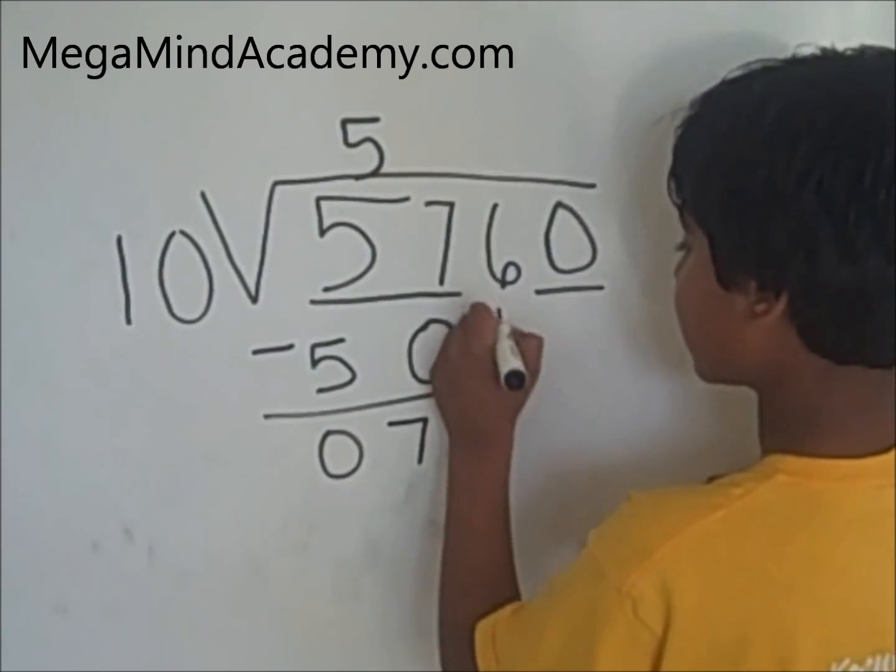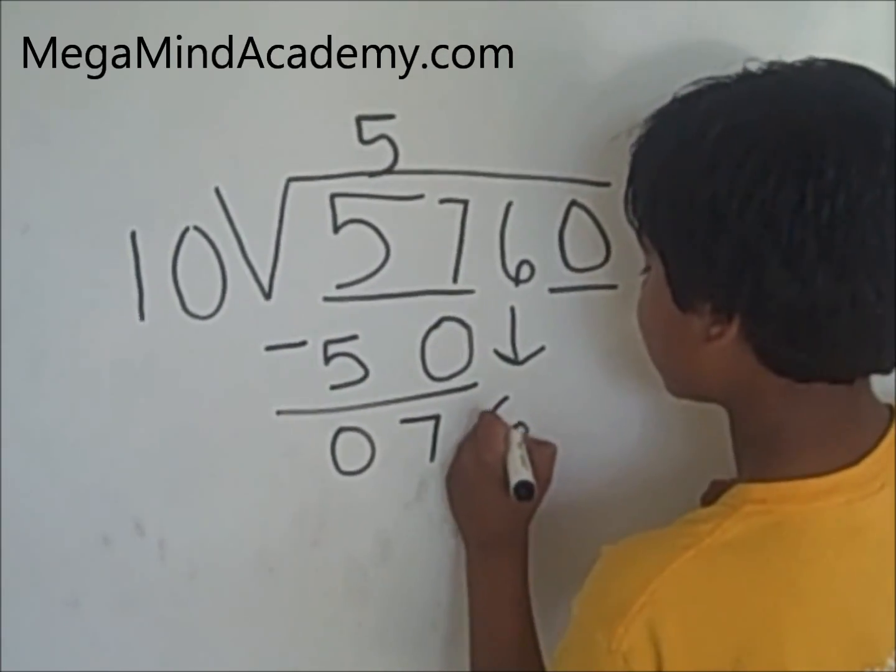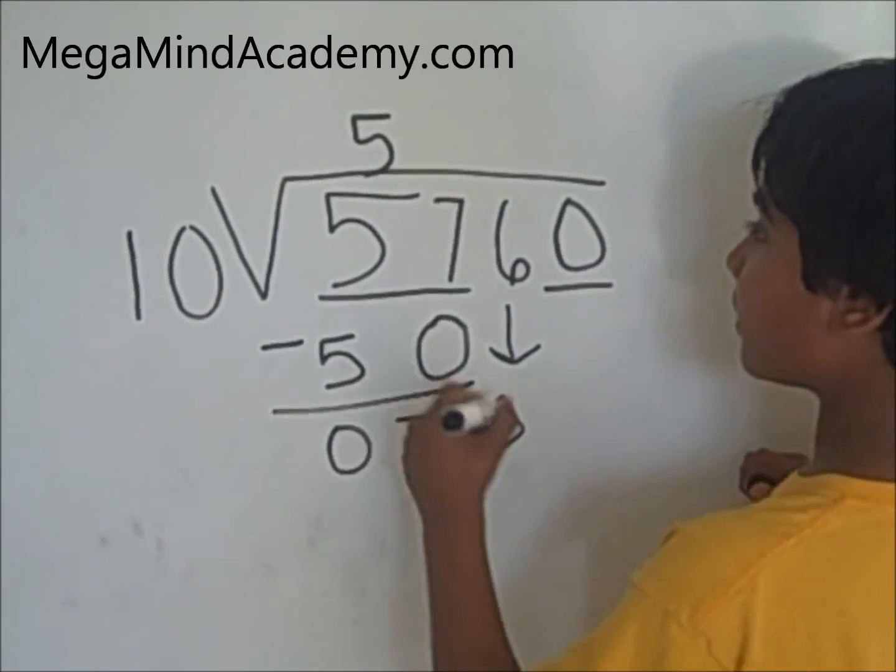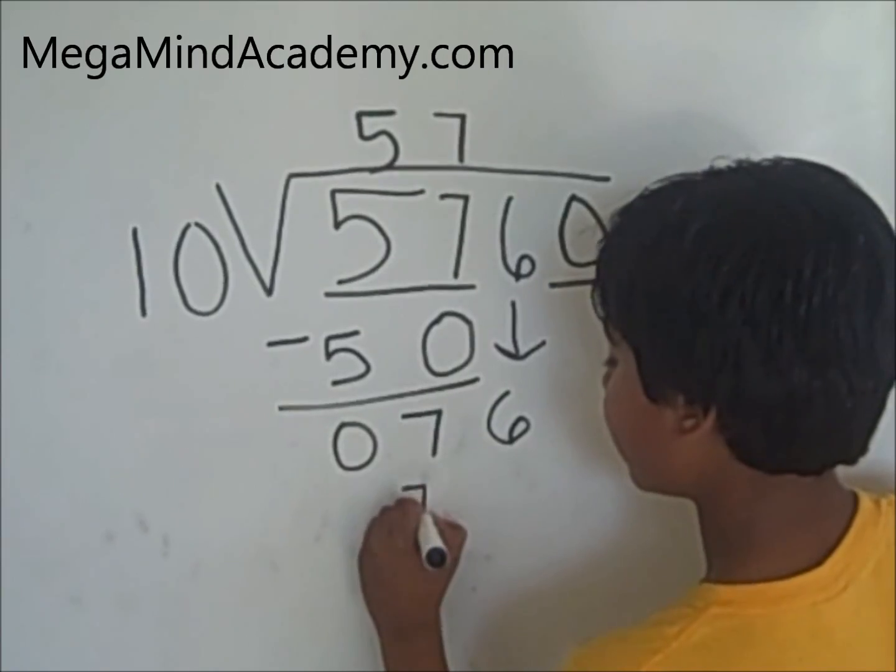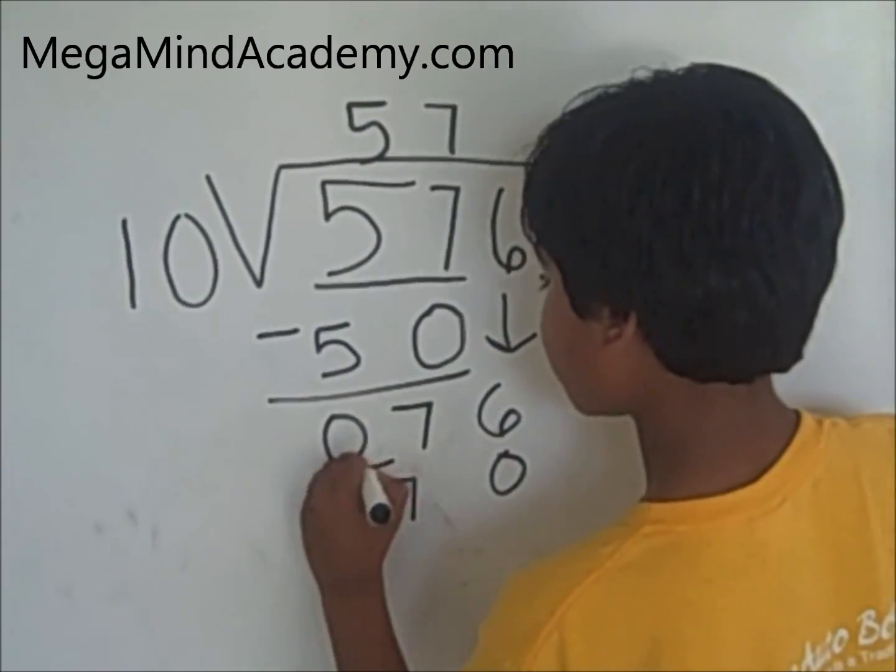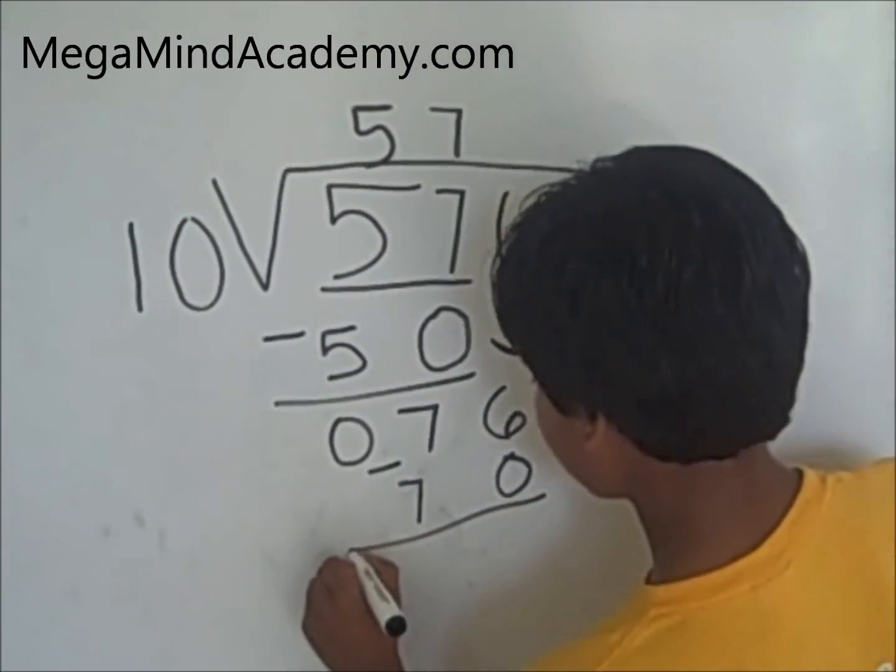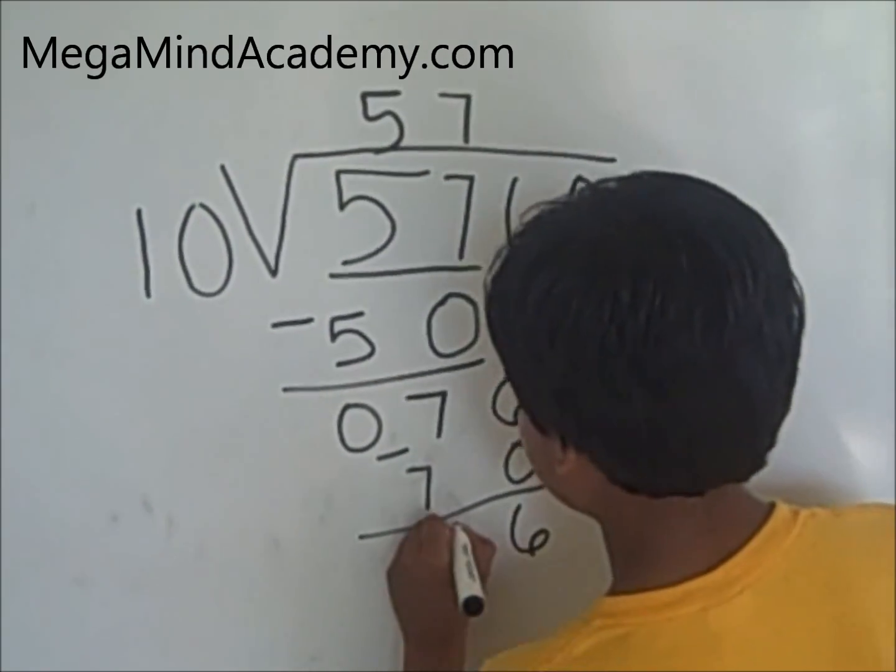Now we put the 6 down. Now the number is 76. 10, 7 is a 70. You subtract 70 from 76. That is 6.